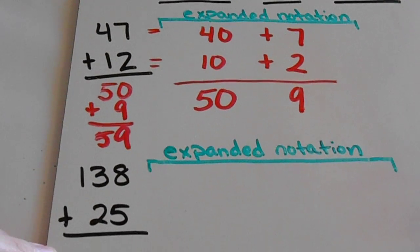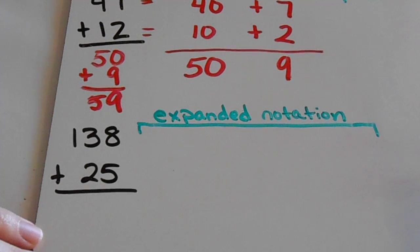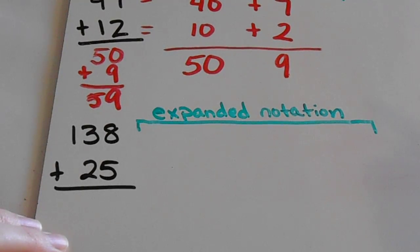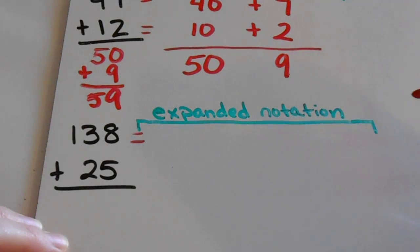Now it also works, as I said, with numbers where there is going to be regrouping. So in this addition problem, 138 plus 25, again I'm just going to take these two numbers and break them down into their parts into expanded notation.